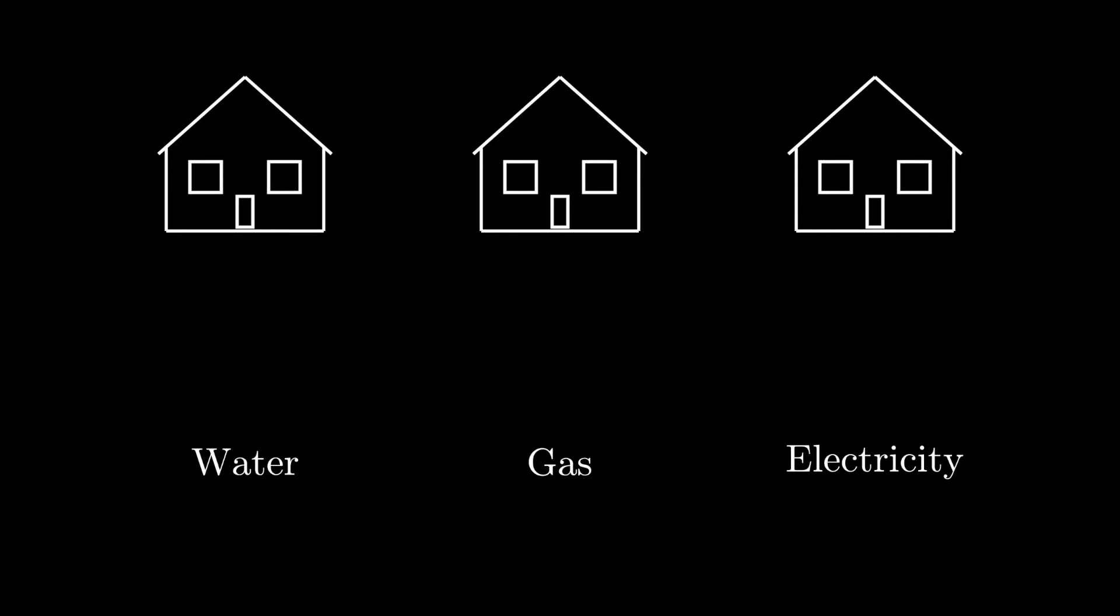The truth is you're always going to run into this problem where the last connection that you need to draw, you're not going to be able to do it without crossing lines. The graph that we're trying to create here is called a K33.